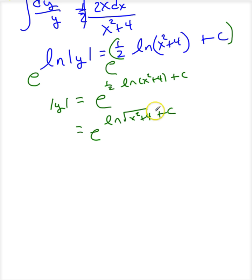Now, let me use another trick here. This is e to the natural log of the square root of x squared plus 4 times e to the c. I'm just using the powers rule. Now, this right here is a constant. It's just a constant. So, let me call this c1.